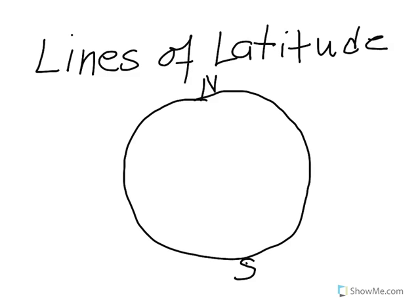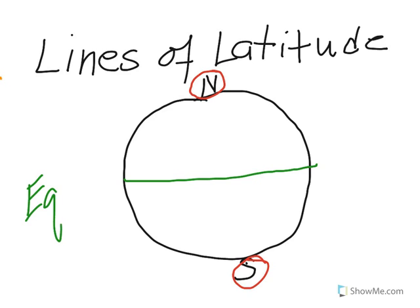Let's talk about those lines of latitude. Here we have the Earth, and this is the North Pole. Here is the South Pole. What we need to do is create a line that is halfway between the North Pole and the South Pole, and this is going to go right across here — and that is going to be the equator. What we've gotten as a result of that is a Northern Hemisphere and a Southern Hemisphere.